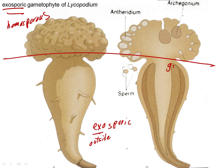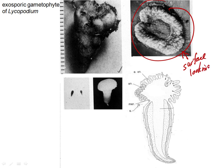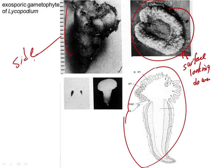There are archegonia and antheridia that occur on the same gametophyte, and water is needed to transport the sperm. The sperm is mobile and will swim, but water has to be present to transport it.